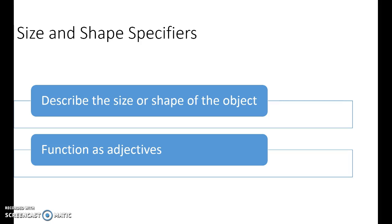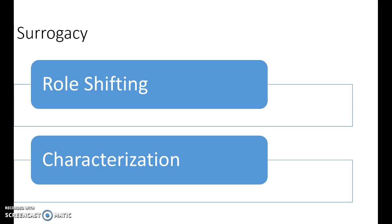And then finally, sometimes surrogacy was referred to as a classifier. Surrogacy means when the whole body takes on or performs as if it were something else. So this is when you show what somebody looked like when they were eating, or you show what someone's face looked like when they heard some news.